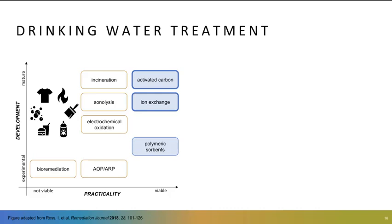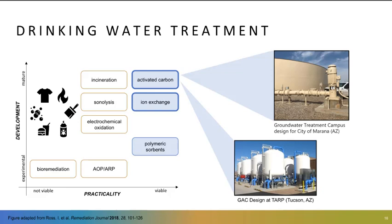We'll share this diagram that shows a range of treatment options on the scale of practicality from left to right, and stage of development — how experimental versus mature those approaches are. I'm going to talk mainly about those outlined in blue. Activated carbon and ion exchange are our go-to processes for drinking water treatment when we want to remove PFAS, because they're both viable and mature technologies.